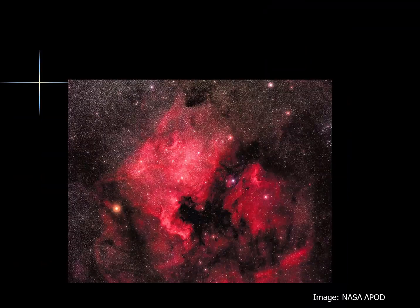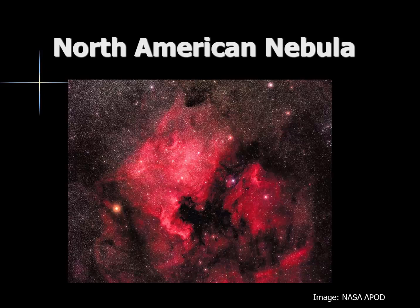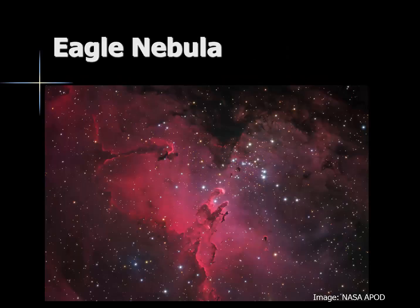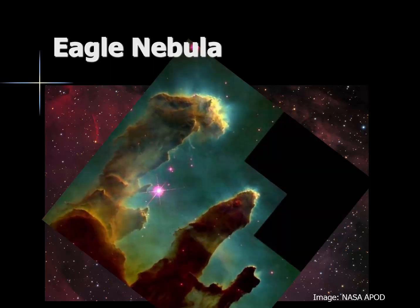Some nebulas take on rather unique and interesting shapes. It may come as no surprise that many folks named this one the North American Nebula. This one is known as the Eagle Nebula — maybe you can imagine an eagle flying to the upper right-hand corner of the image. This has been studied in more detail with the Hubble Space Telescope. In this false color image, we can see these dark areas are areas where we know there are thicker amounts of gas in the cloud, and it's these areas where new stars are forming.